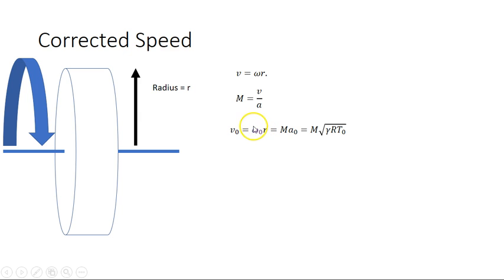is equal to omega naught, so the radians per second at sea level times the radius, and that should be equal to, just rearranging this equation, the Mach number times the speed of sound at sea level, which is gamma rt0.